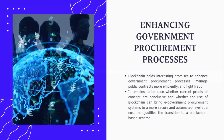Additionally, blockchain could enhance government procurement processes, but it is essential to weigh the costs and benefits carefully. It holds interesting promises to enhance government procurement processes, manage public contracts more efficiently, and fight fraud. However, it remains to be seen whether current proofs of concept are conclusive and whether the use of blockchain can bring e-government procurement systems to a more secure and automated level at a cost that justifies the transition to a blockchain-based system.